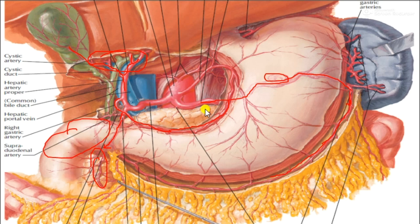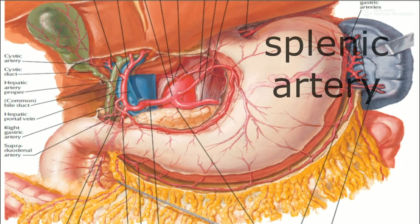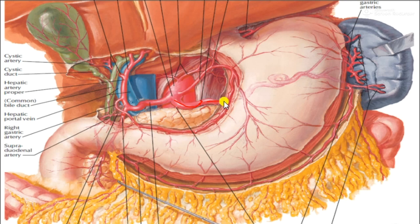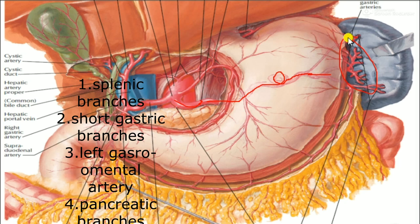The splenic artery is the greatest branch of the celiac trunk. The artery runs from right to left along the superior border of the pancreas in the direction of the splenic hilum. It gives several splenic branches that enter the spleen, along with pancreatic branches and the left gastro-omental artery.